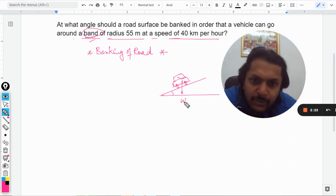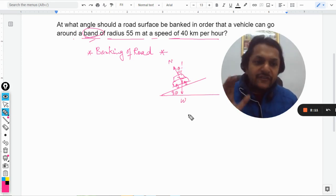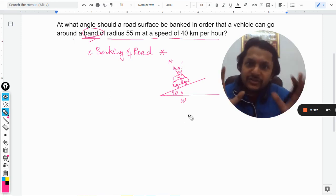What happens here is this is taken as the weight W, and the normal reaction will be normal to the surface. So this angle becomes equal to this angle theta, the angle of inclination. These two angles are equal to each other. If you don't know why these two angles are equal, please let me know in the comment section.